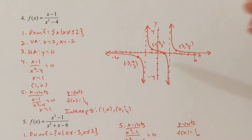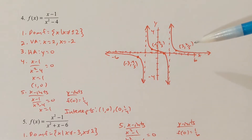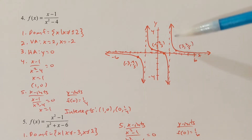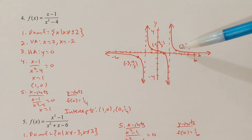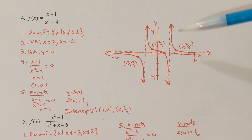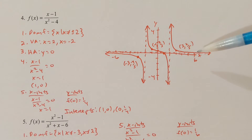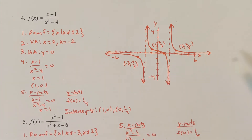If x equals 3, then 3 minus 1 is 2, and 3 squared is 9 minus 4 is 5, so 2/5. Since 2/5 is greater than 0, the point (3, 2/5) puts me in the upper right-hand region of the graph. When graphing, you should only need one or maybe two points in a particular section just to see where the graph is.